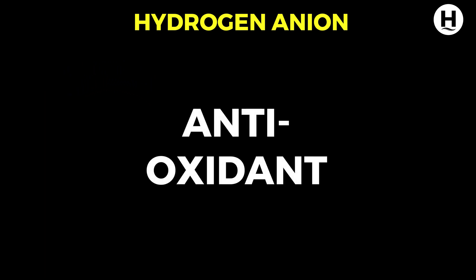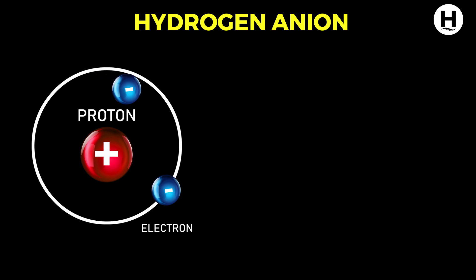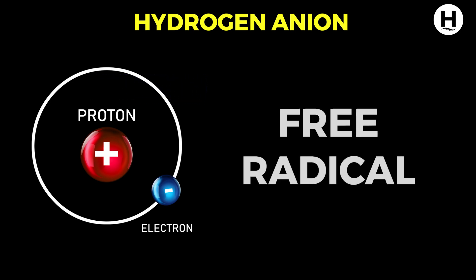Because it is not found under normal circumstances due to how quickly it reacts, some have claimed that the hydride ion makes an excellent therapeutic antioxidant that can easily donate its electron to a free radical. If hydride loses an electron, what does it become? Atomic hydrogen — which is also a free radical.